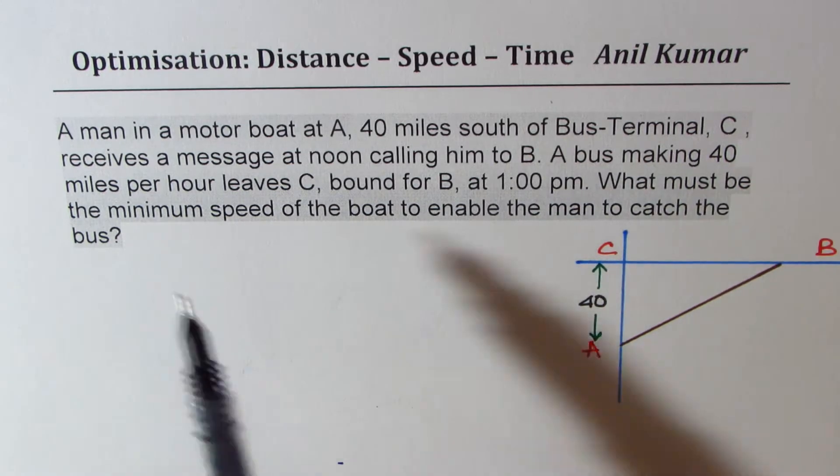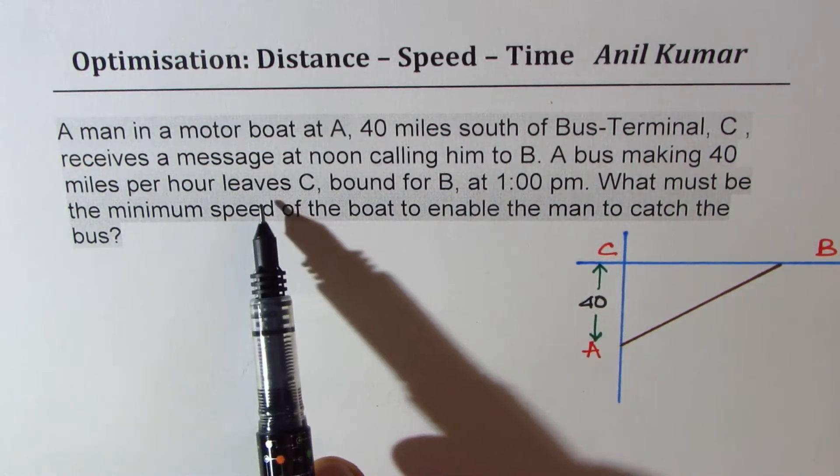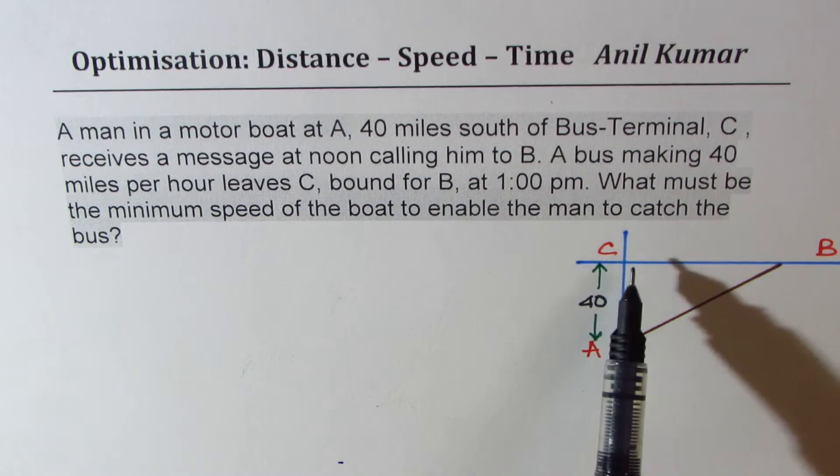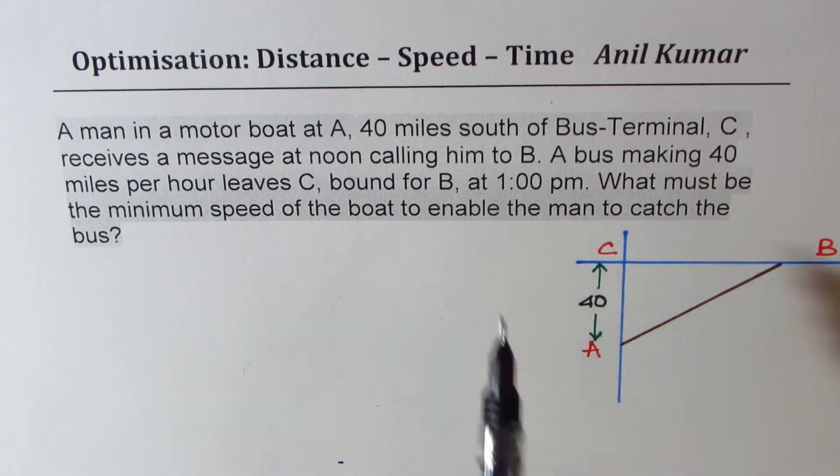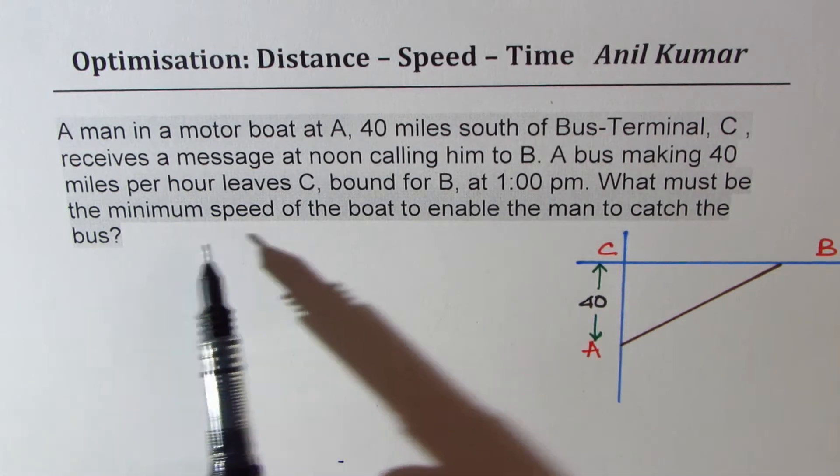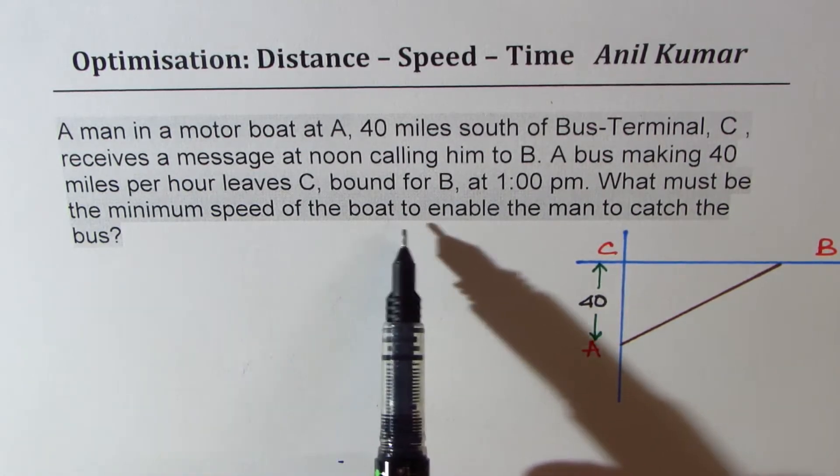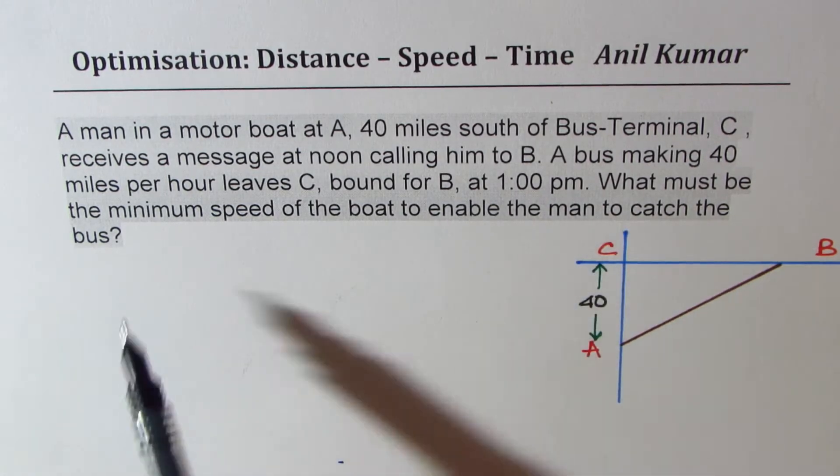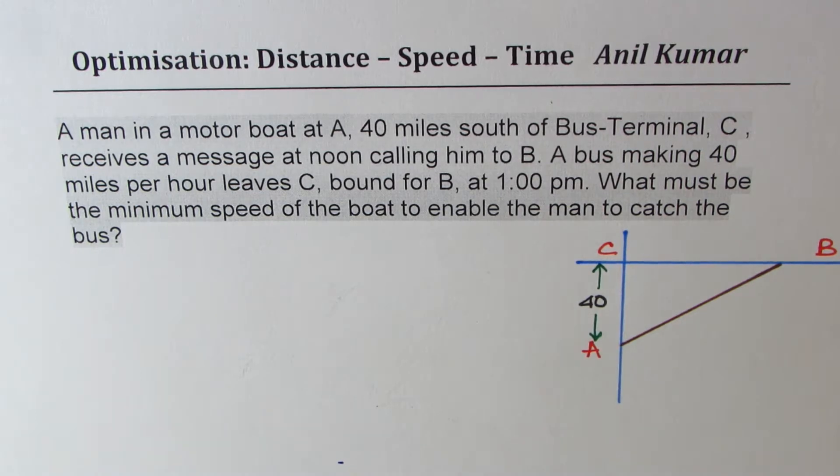A bus making 40 miles per hour leaves C, bound for B in that direction, at 1 p.m. What must be the minimum speed of the boat to enable the man to catch the bus? You can always pause the video, answer the question, and then look into my suggestions.